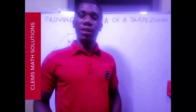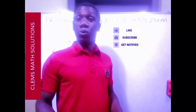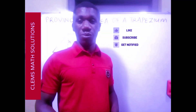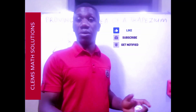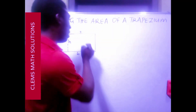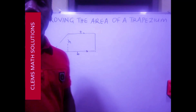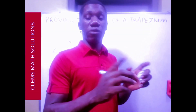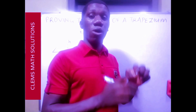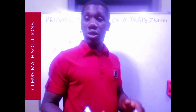Hello viewers, subscribers and my fellow teachers, welcome once again to Clem's Math Solutions. In this video I'll be showing you the proof of the area of a trapezium — the half sum of the parallel sides times height. The area of a trapezium is the sum of the parallel sides times height divided by two.